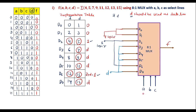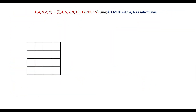Now let me consider the second case: f(a, b, c, d) using the same minterms but with a 4-to-1 MUX with A, B as select lines. Previously we used A, B, C as select lines; now we use only A, B. So we use a 4-to-1 MUX.